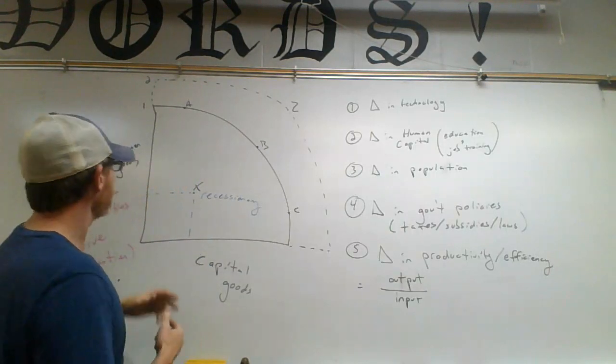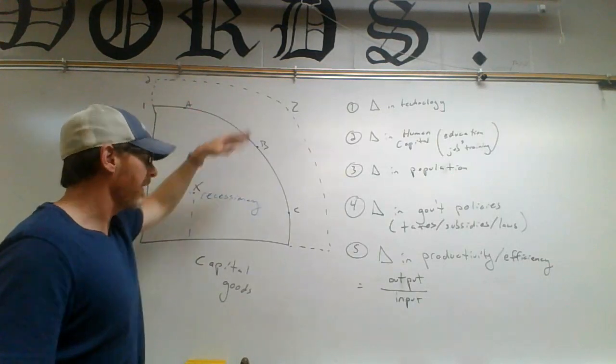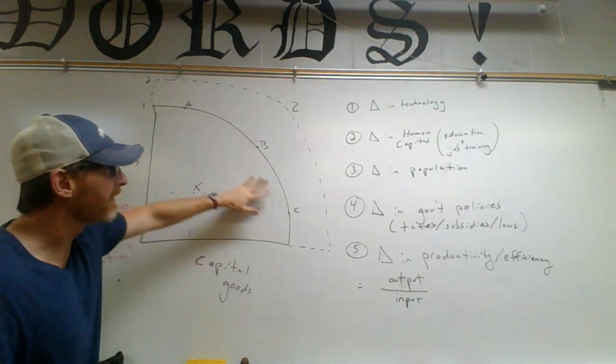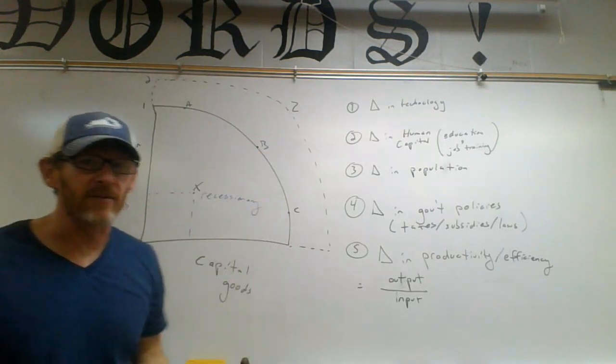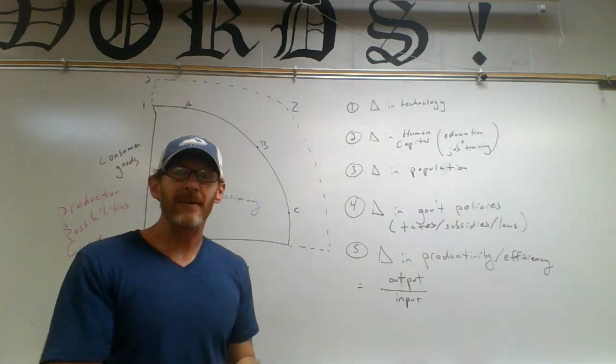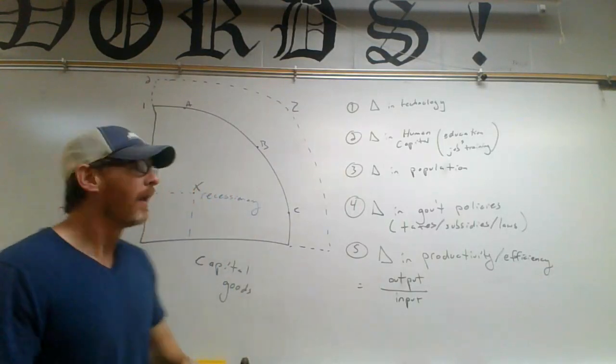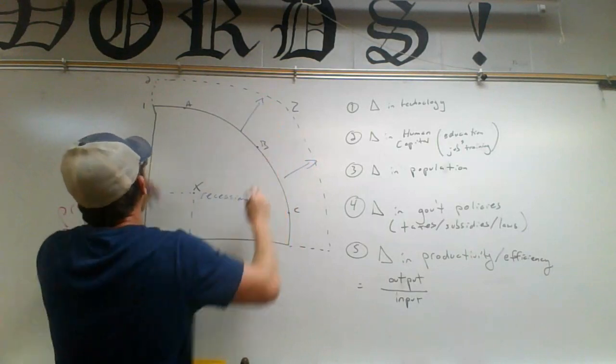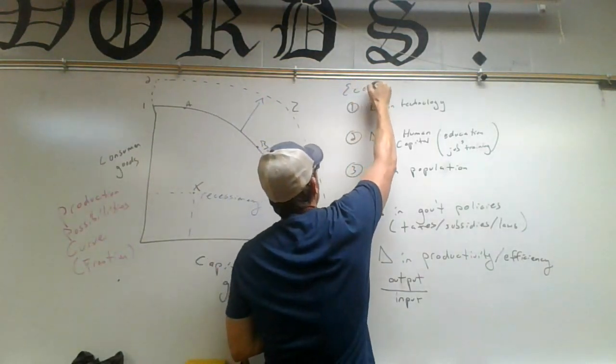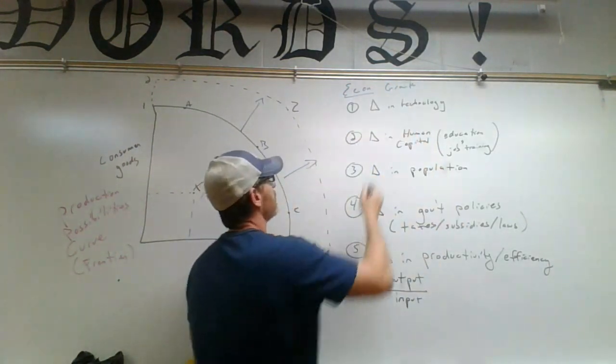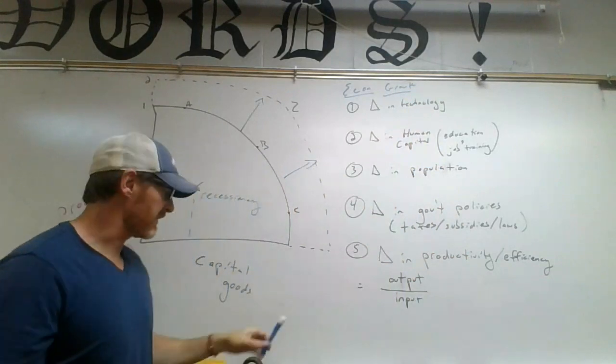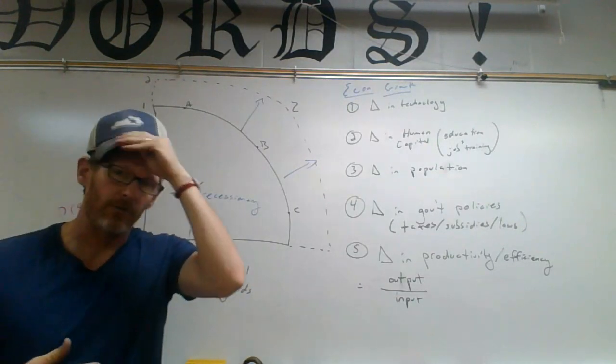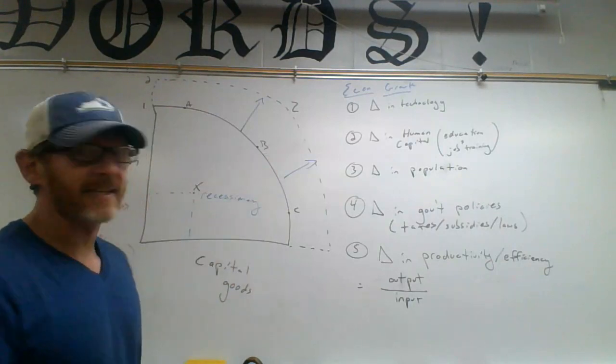So then let's look at how can we get to where our economy can grow? How can we achieve economic growth so we can go from curve one being as good as it gets to curve two being as good as it gets? And again, that doesn't mean we have to produce there. It means that is the limit, the best that we can possibly do. We want to be able to move this curve up to curve two. And there's five or six ways we can do this, and I want you to make sure you know these because the test is going to be very heavy in understanding how we achieve economic growth. We can also achieve economic contraction, which we'll also talk about here in a second.